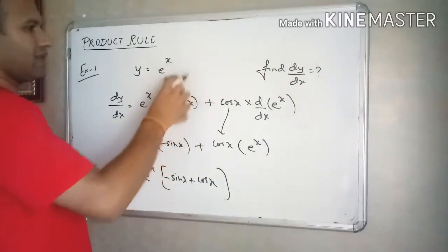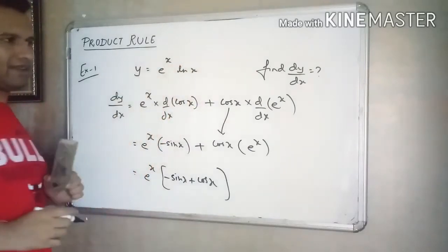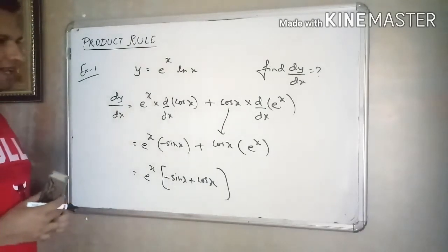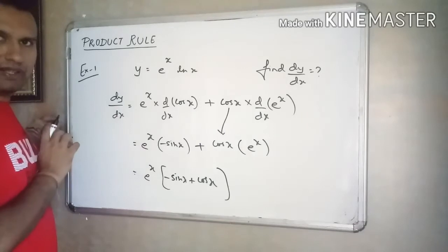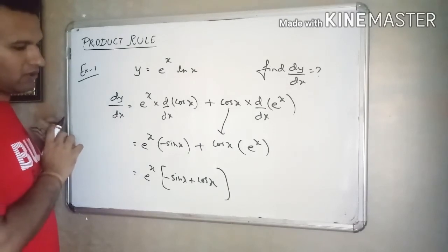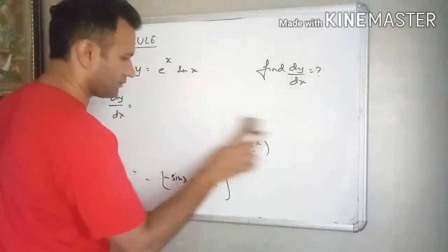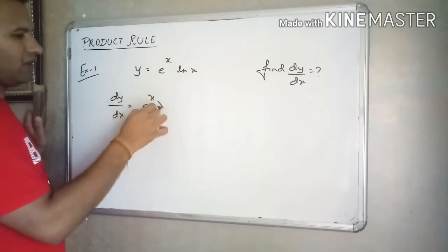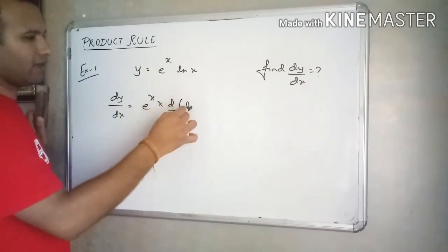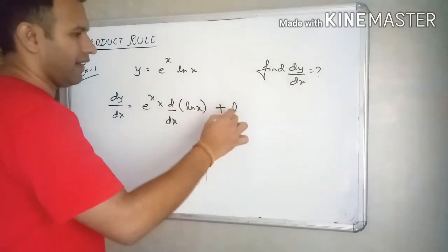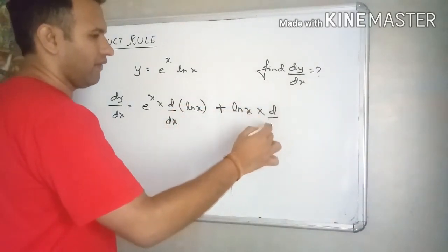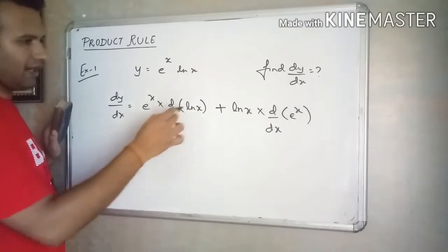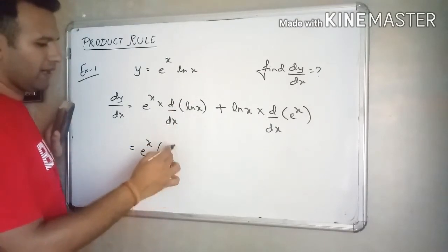Let us take another example: y is equal to e raised to x into ln x. Please pause and try this question. Applying the product rule: first function into derivative of second function plus second function into derivative of first. So e raised to x into d by dx of ln x, plus ln x into d by dx of e raised to x. Derivative of ln x is 1 by x, and derivative of e raised to x is e raised to x. So the answer is e raised to x times 1 by x, plus ln x times e raised to x.